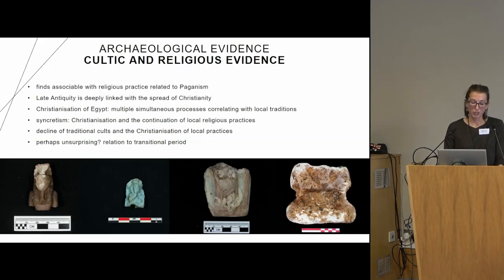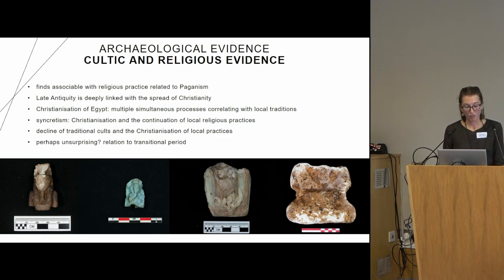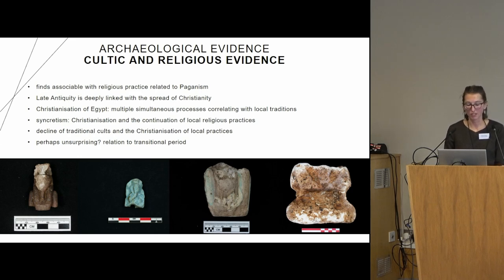Moving to the cultic and religious evidence: all finds associable with religious practice related to paganism, even though late antiquity is deeply linked with the spread of Christianity. This brings us to think about the Christianization of Egypt being characterized by multiple simultaneous processes correlating with local traditions.